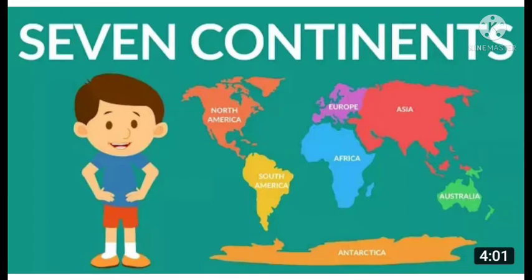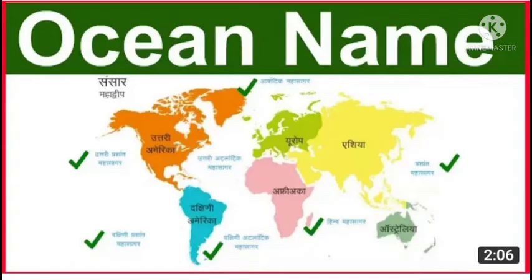Now I am going to tell you about the oceans. There are five major oceans on Earth: the Pacific Ocean, Atlantic Ocean, Antarctic Ocean, Arctic Ocean, and Indian Ocean. India is the only country that shares its name with an ocean — that is the Indian Ocean.